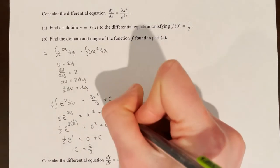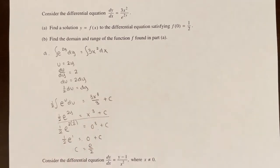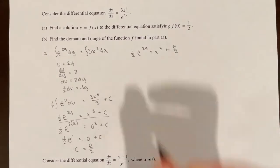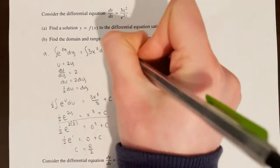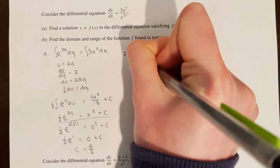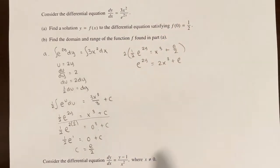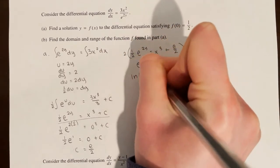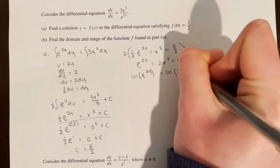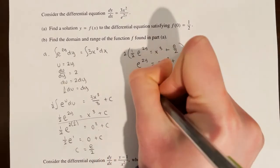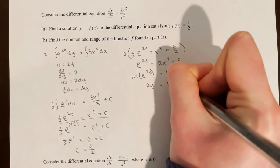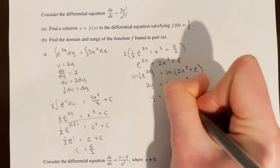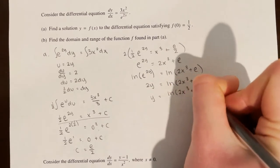Taking the equation (1/2)e^(2y) = x³ + e/2 and multiplying both sides by 2 gives e^(2y) = 2x³ + e. Taking the natural log of both sides: ln(e^(2y)) = ln(2x³ + e), so 2y = ln(2x³ + e). Dividing by 2: y = ln(2x³ + e)/2. That is my solution.